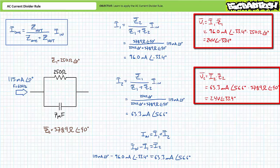Similarly, Ohm's law solving for voltage demonstrates impedance Z2 also experiences a differential of 24 volts at an angle of negative 33.4 degrees. Voltage across this parallel circuit is indeed the same.